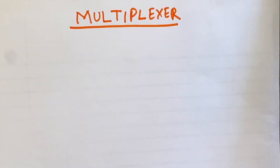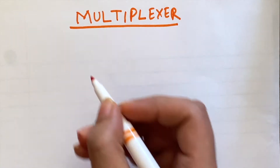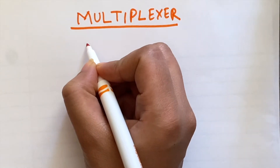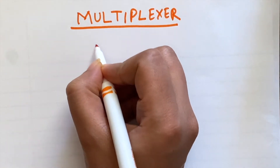Welcome to the channel. In this video we are going to learn about the multiplexer. What a multiplexer does is it selects one out of several inputs and forwards it to a single output line. So there are a number of inputs to the multiplexer.